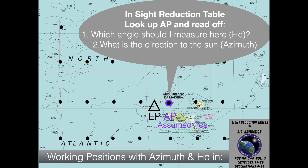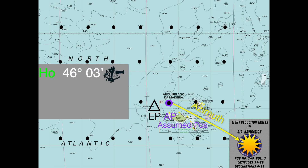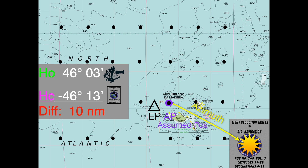So let's assume that we have shot the sun at exactly a specific time and we have chosen that assumed position. We get the azimuth out of the sight reduction table — that's the direction of the sun. And let's assume that we have measured the sun with an altitude of 46 degrees and 3 minutes. In the book, we found that the HC, if we were in this position, should have been 46 degrees and 13 minutes. There is a little difference — a difference of 10 minutes, which corresponds to 10 nautical miles. Since it's smaller, we should have been further away from the sun. So the intercept is further away, and perpendicular to that is my position line.